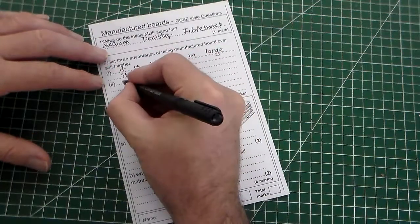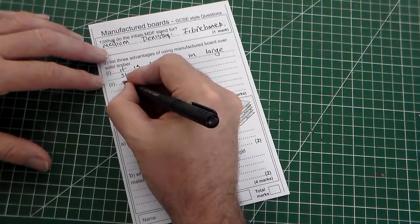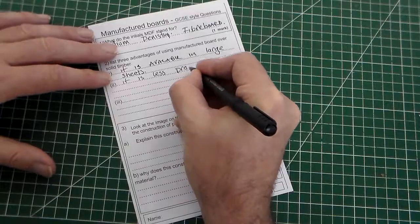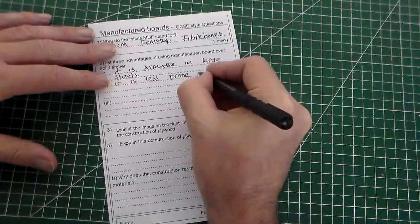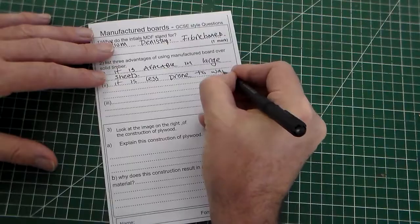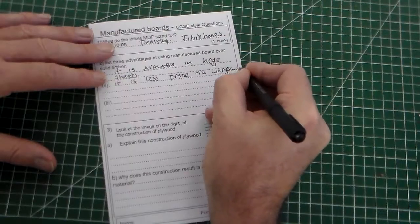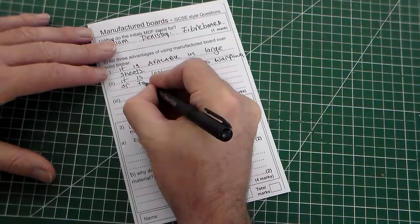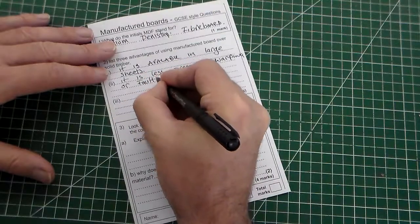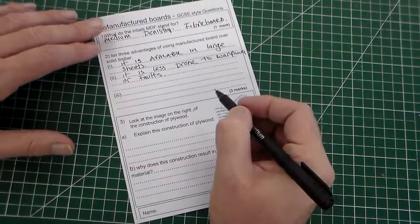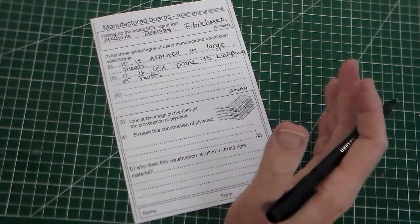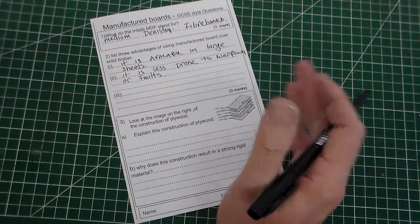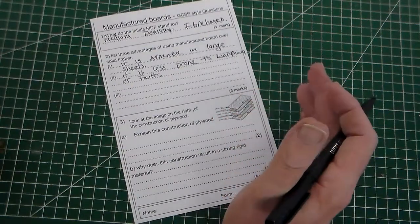Number two, it is less prone to warping or faults. So, it is less prone to faulting. If you've got timber, it can have knots, it can have splits, it can warp.